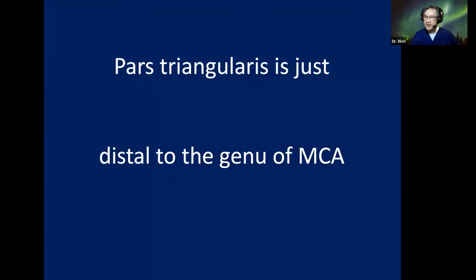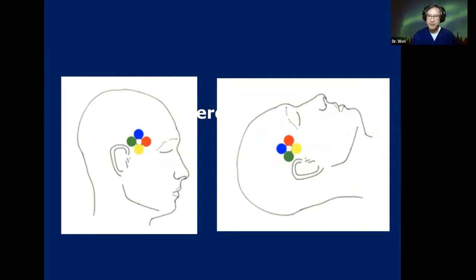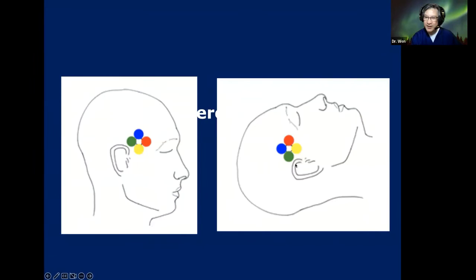The take-home message: the pars triangularis is just distal to the genu of MCA, or the genu of MCA is just proximal to the tip of pars triangularis. One very important concept: during angiography, the patient is in the upright position. But during surgery, the patient is in the supine position. So anything pointing anteriorly on angiography will be pointing superiorly in surgery — everything is rotated 90 degrees.